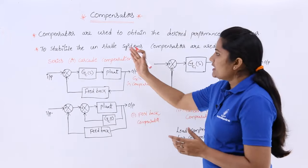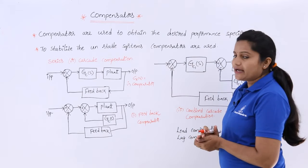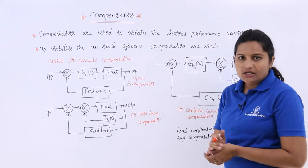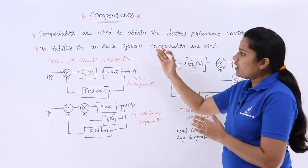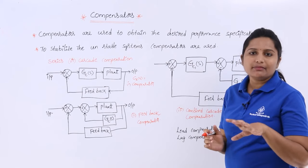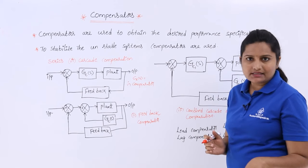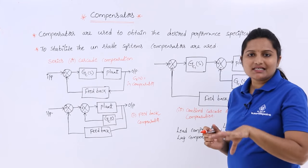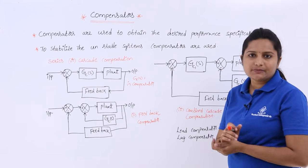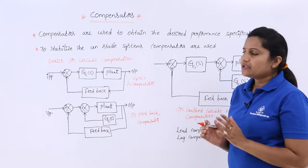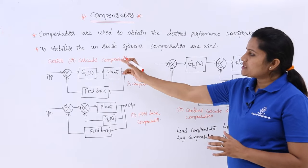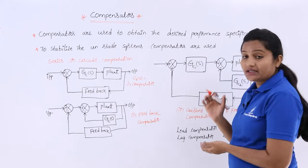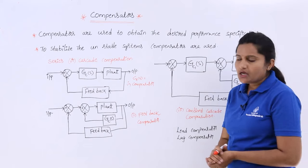Here you can see compensators are used to obtain the desired performance specifications. As we already discussed about stability analysis, if you want stability of the system — if your desired performance specification is stability — then to stabilize the unstable system, compensators are greatly used.